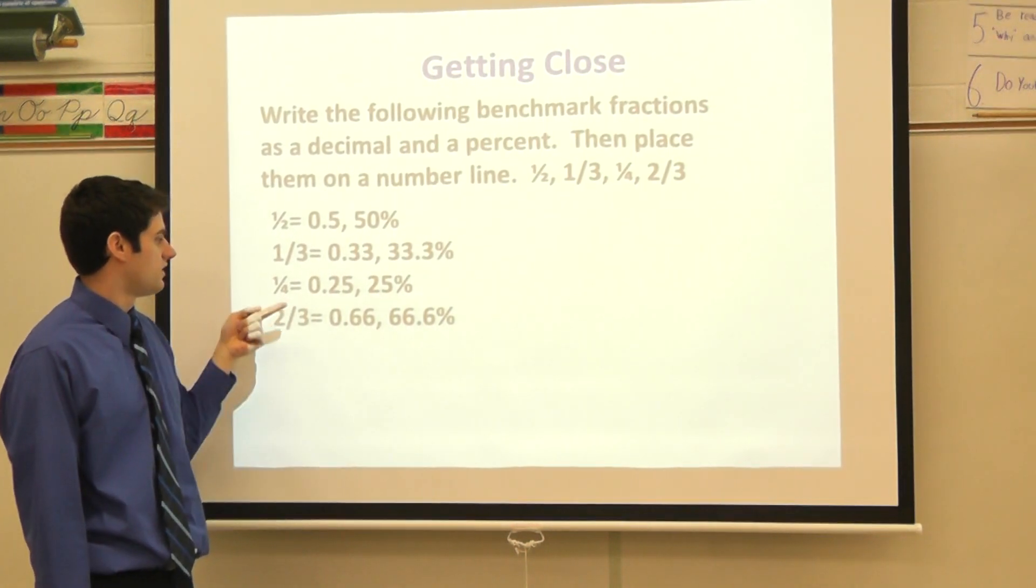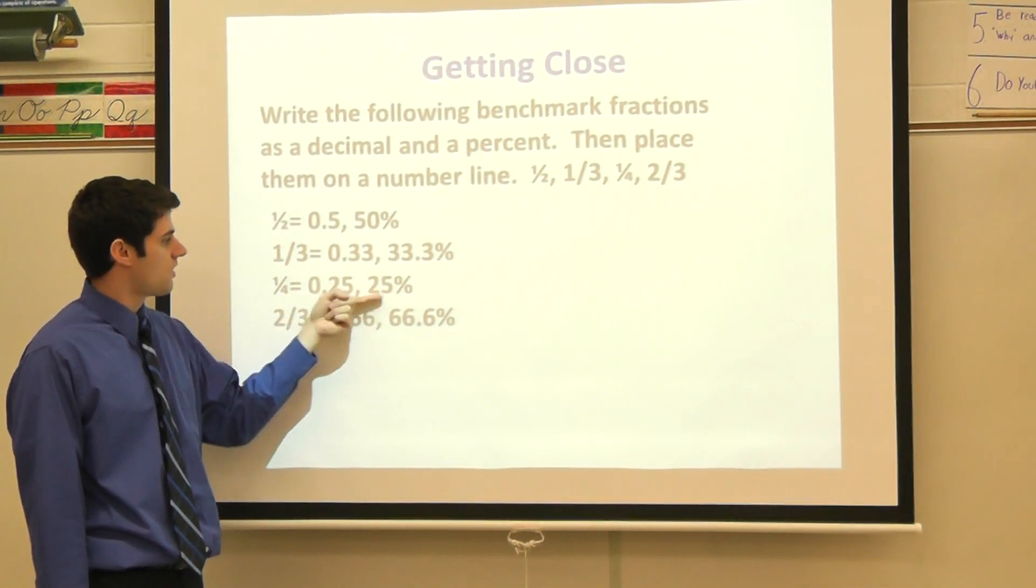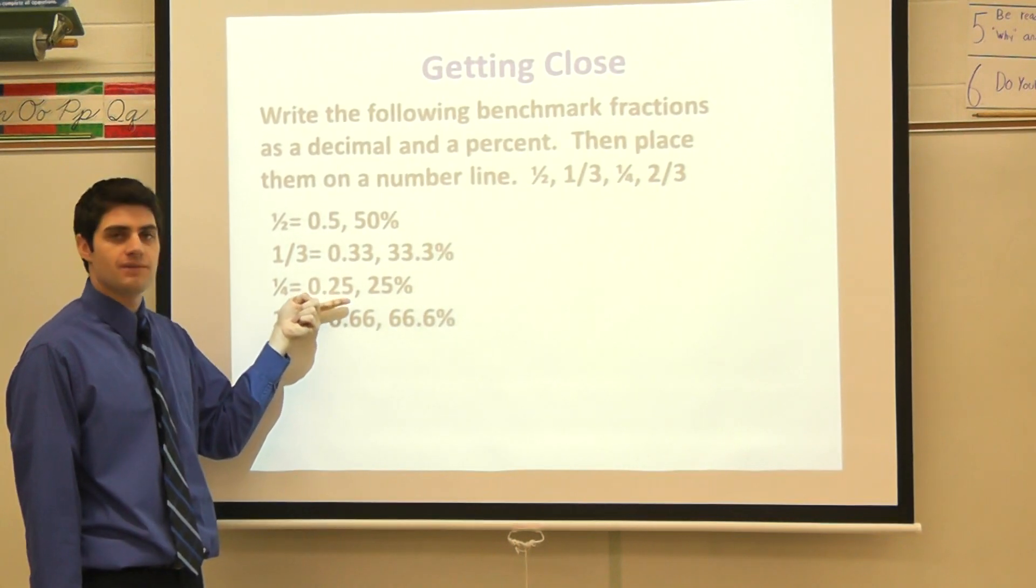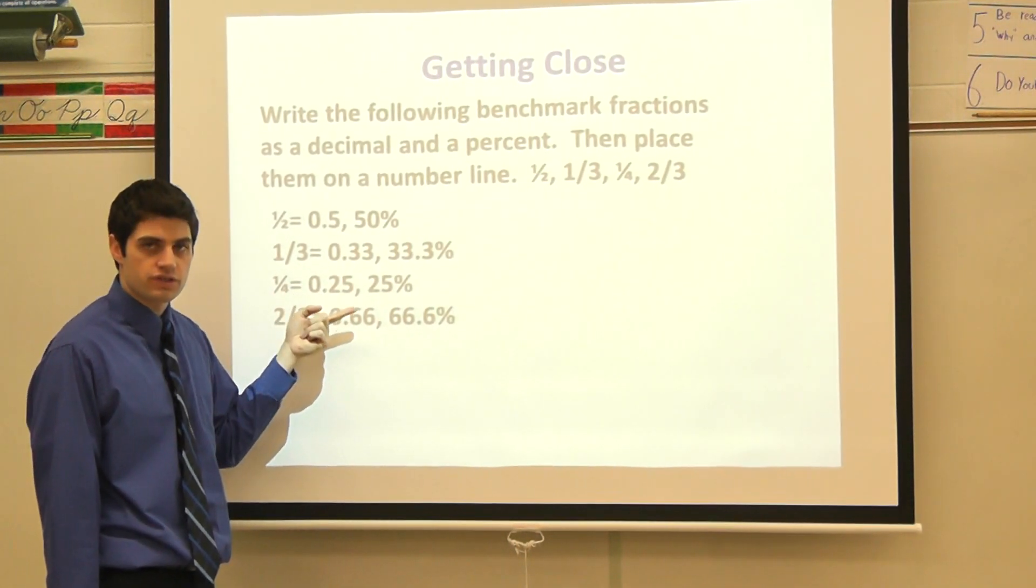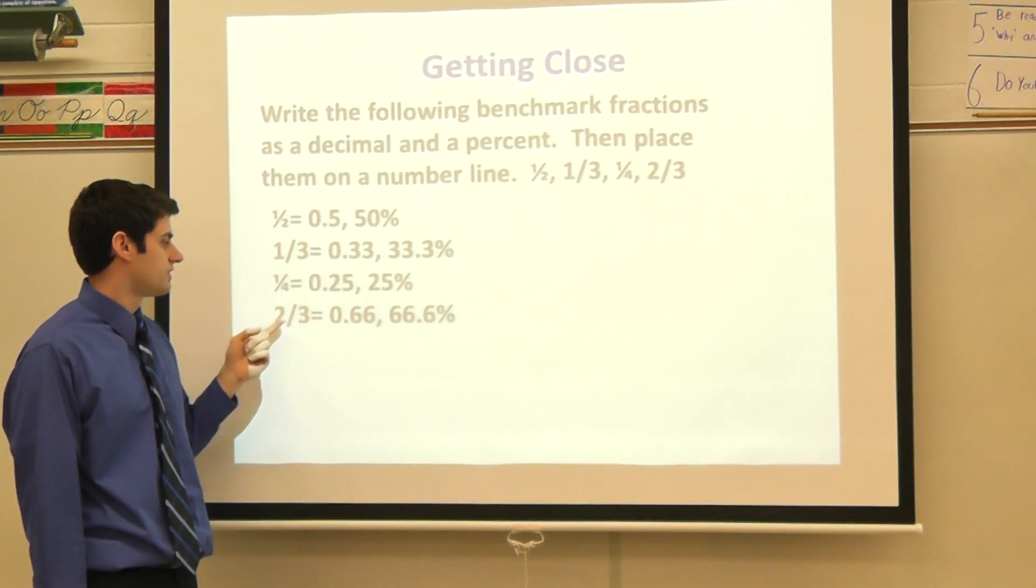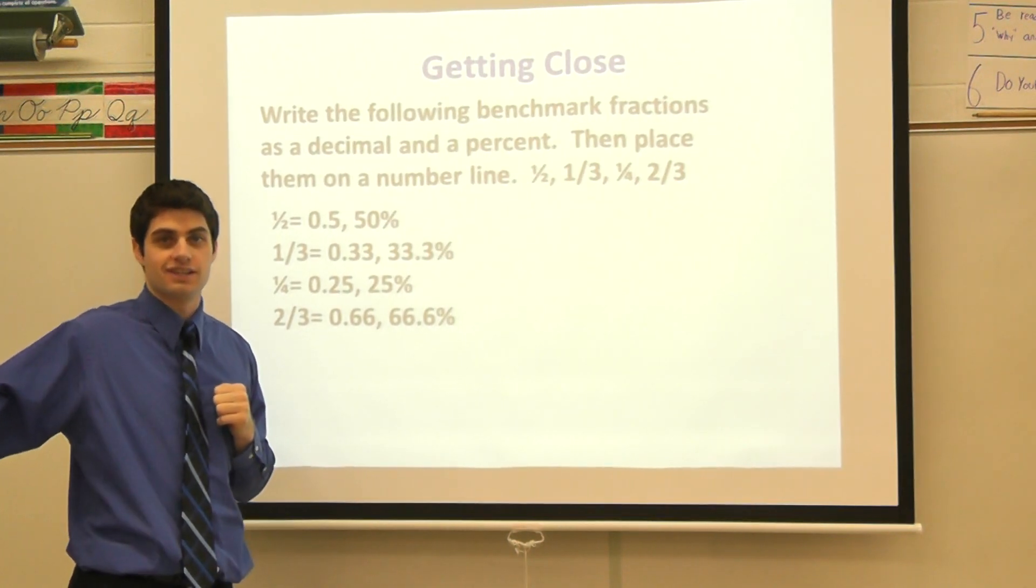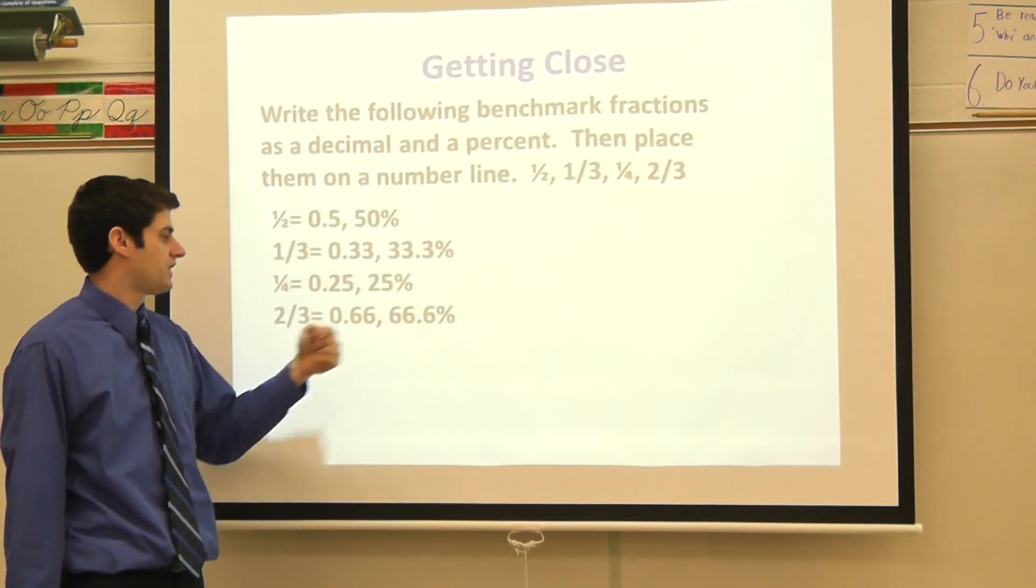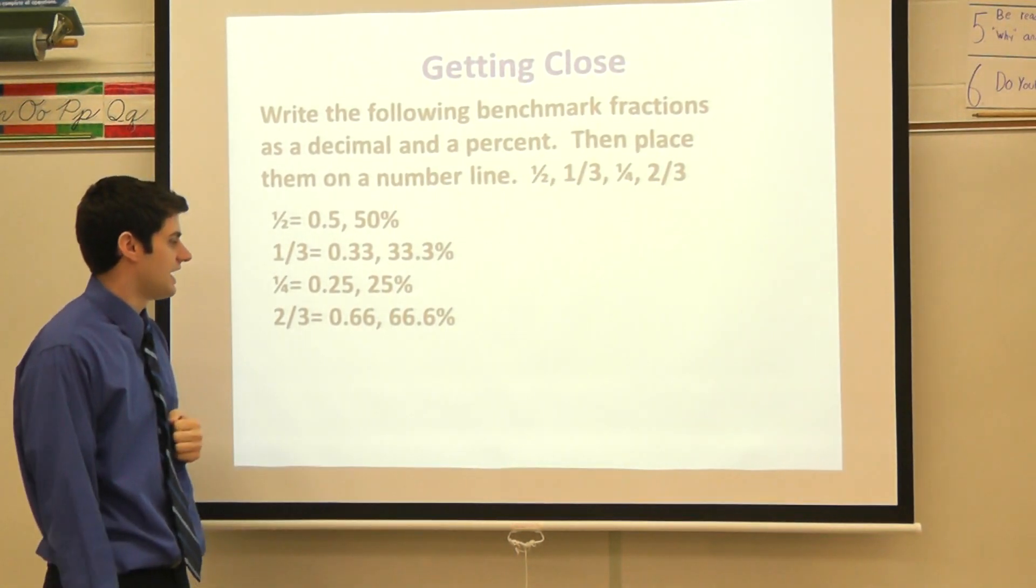Our third one here, one-fourth, one-fourth is 0.25 or 25 percent. Again, if I was reading my decimal on here, this would be 25 hundredths or 25 out of 100. And lastly, two-thirds. Two-thirds would be 0.66, and you see the repeater, 666667 throughout. We commonly know two-thirds is 66.6 percent, and we're kind of rounded up there at the end.